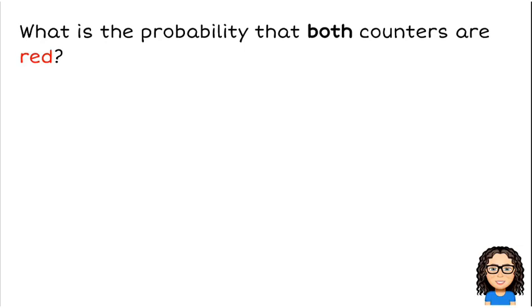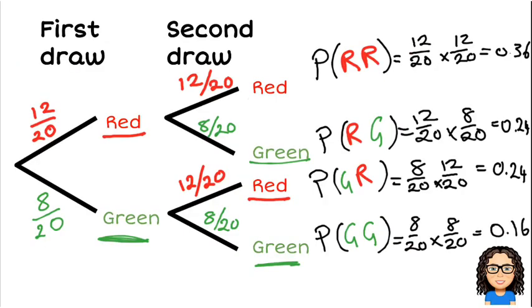What is the probability that both counters are red? Okay, so that's talking about the probability of getting a red, then another red. So luckily we've already done all the hard work, we can just read this off the table. So red, red is 0.36.